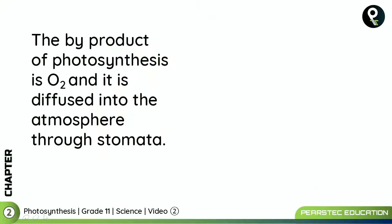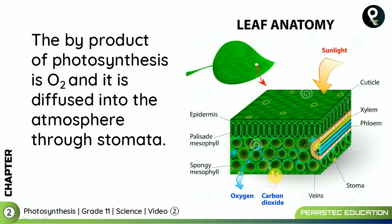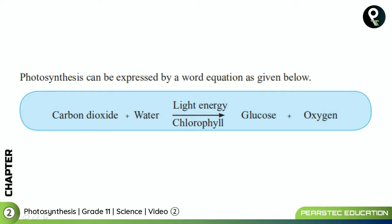The byproduct of photosynthesis is oxygen, and it is diffused into the atmosphere through the stomata. The plant takes in carbon dioxide, and oxygen is also diffused out into the atmosphere.